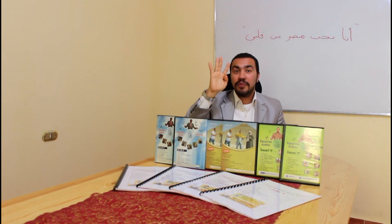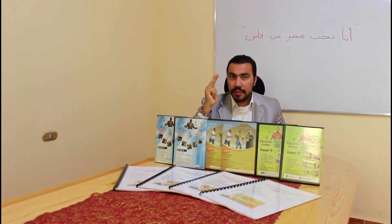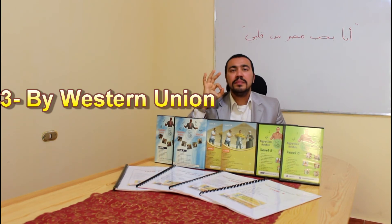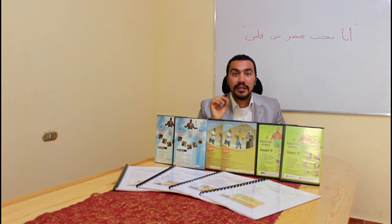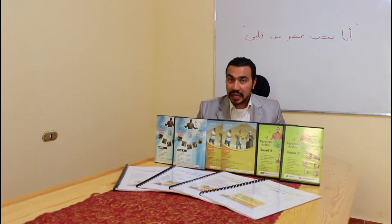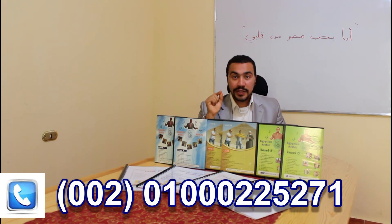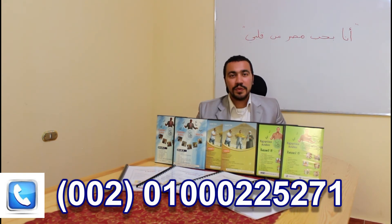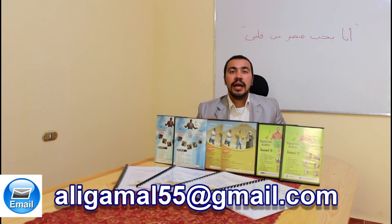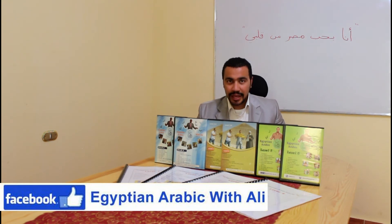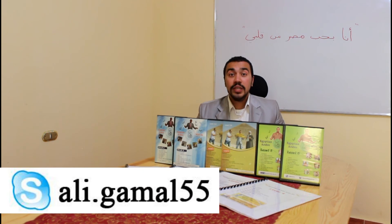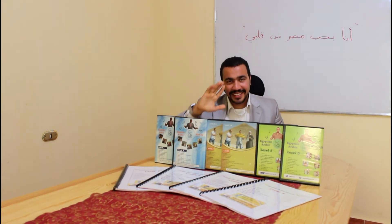For payment there are 4 ways: number 1 by PayPal, number 2 by Western Union, number 3 by Mandra, number 4 to a bank account in Egypt. If you want to get the special offer, you are welcome to contact me at my telephone number 0100-022-5271, my email ali555@gmail.com, my Facebook page Egyptian Arabic, my Skype name ali555. Ali, Hurghada, Egypt.